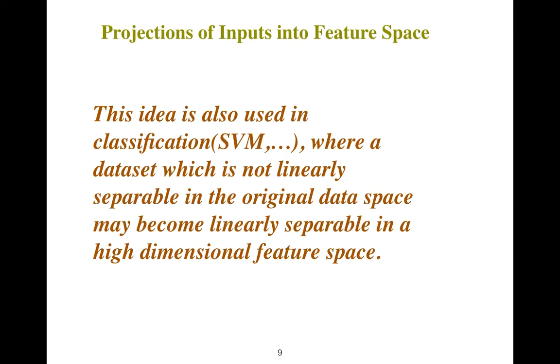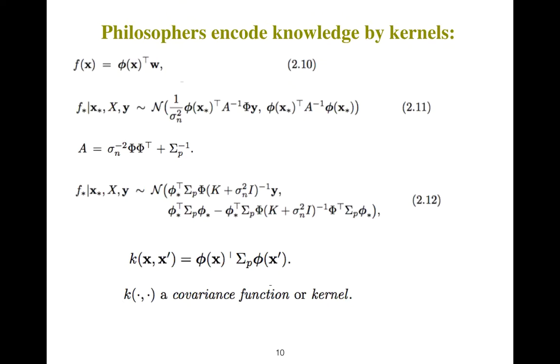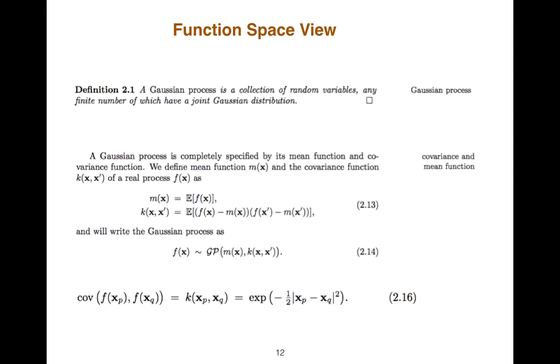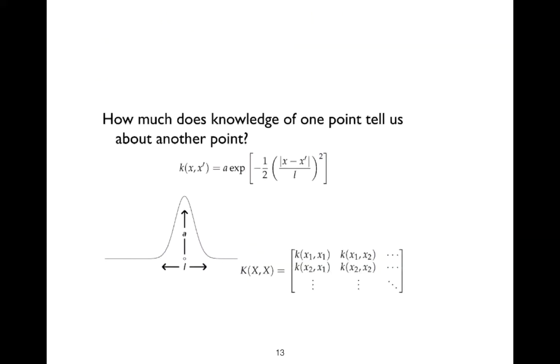Another idea is using projection as we did in support vector machine. We project inputs into feature space and we encode all the knowledge with those kernels. A good kernel could be just like this. We have A and L, and they are hyperparameters. It means that they can be used to scale it both horizontally and vertically.